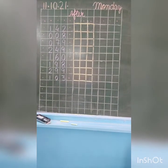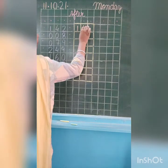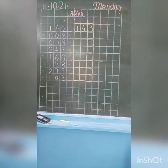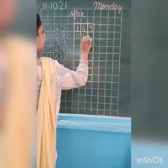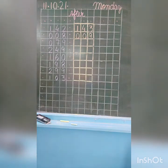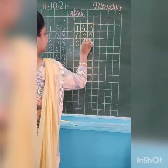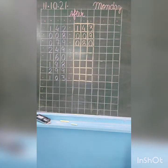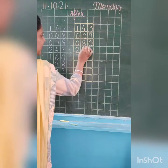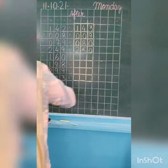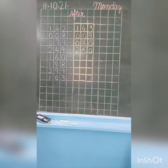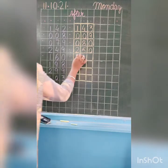Now Vita, tell me what comes after one hundred forty-two? Yes, one hundred forty-three. What comes after only eight? Yes, only nine. Now Vita, tell me what comes after seventy-nine? Very good, it's eighty. Now Vita, tell me what comes after two hundred forty-nine? Two hundred fifty.